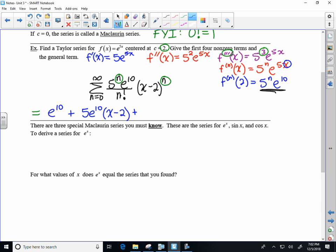Plus, and I plug in a 2. So 25e to the 10th over 2 factorial, which is the same as 2, times x minus 2 to the 2nd. Plug in a 3. 5 to the 3rd power is 125. So 125e to the 10th over 6, yes 6 because it's 3 factorial, x minus 2 to the 3rd.